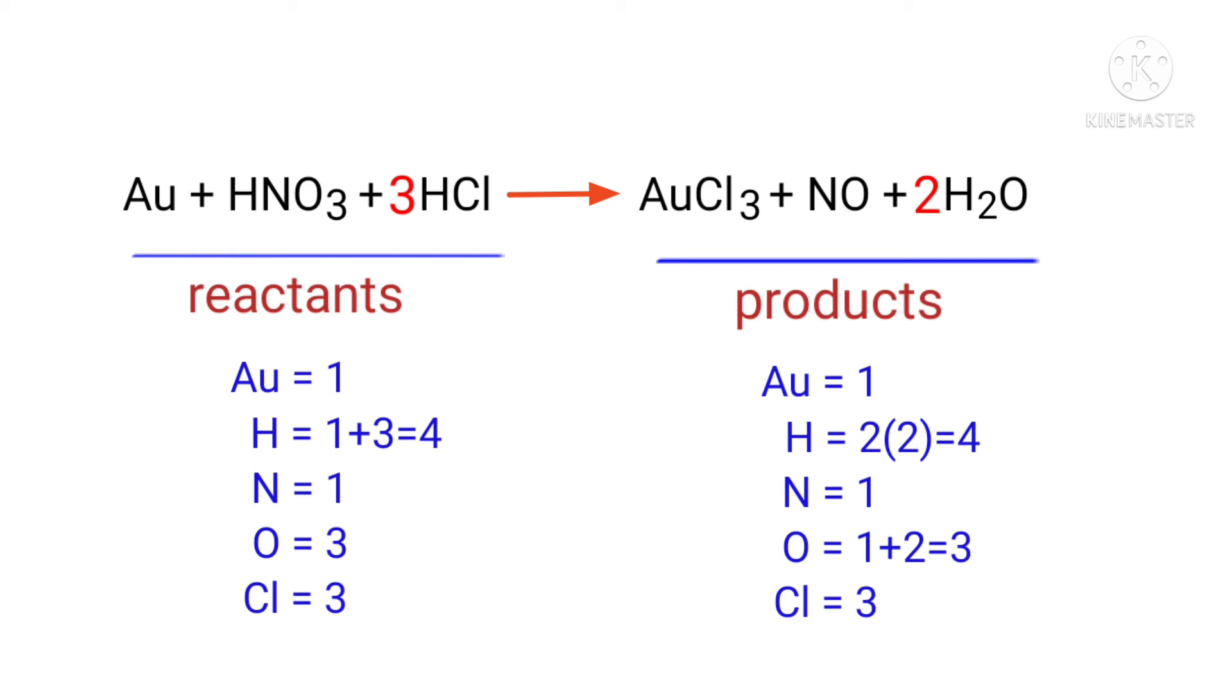There are 1 gold atom, 4 hydrogen atoms, 1 nitrogen atom, 3 oxygen atoms, and 3 chlorine atoms on both sides.